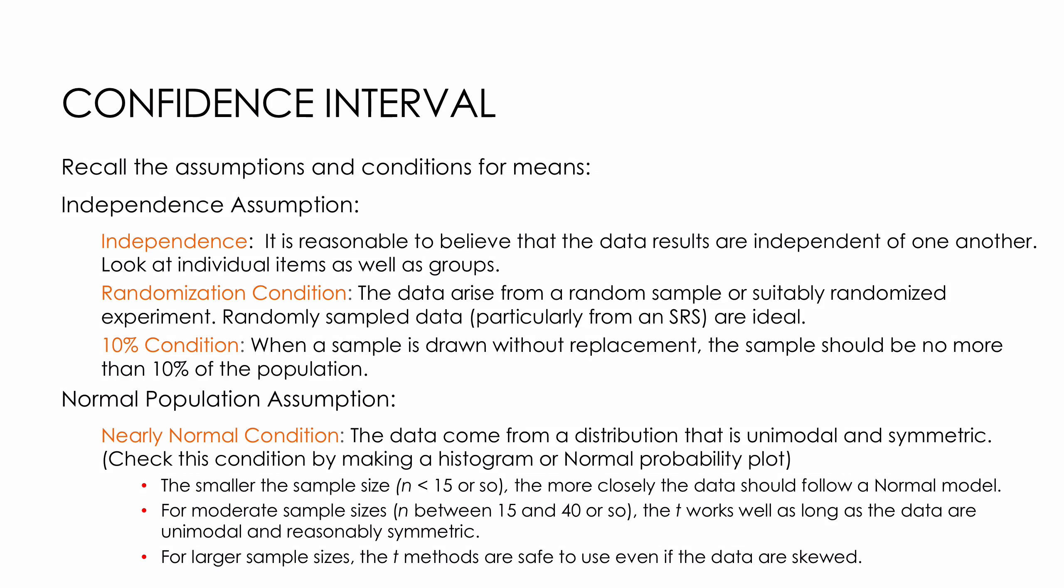Keep in mind the nearly normal: for smaller sample size, n less than 15, we really want it to look like a normal model. For somewhere in the middle, 15 to 40, it's okay to use a T value or T model as long as the data are unimodal and reasonably symmetric. For really large sample sizes, we don't really have to worry about it at all.